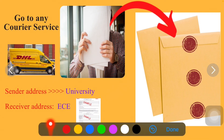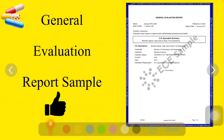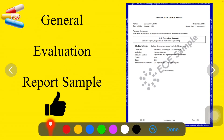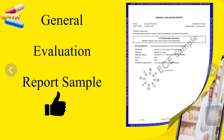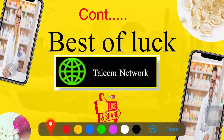Once you have sent all your documents to ECE, you have to wait 15 to 20 days. Within that time you will receive your ECE report. With this, you have completed your first step, and on the basis of this report you can apply for the second step. Best of luck and see you in the next video.